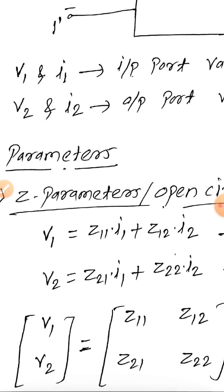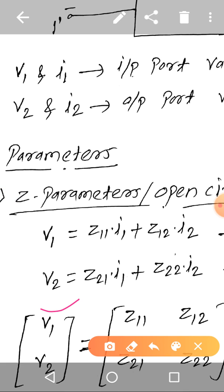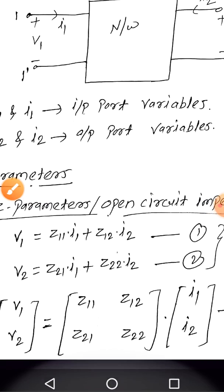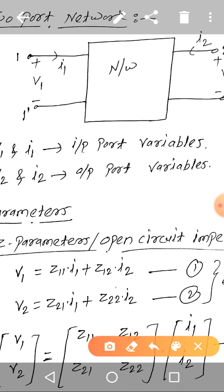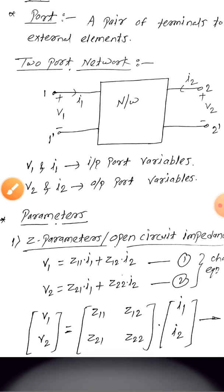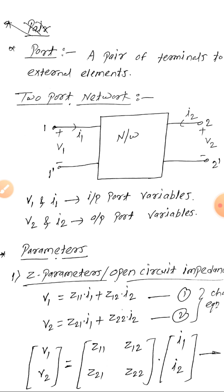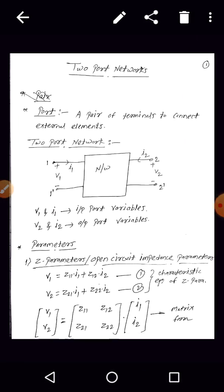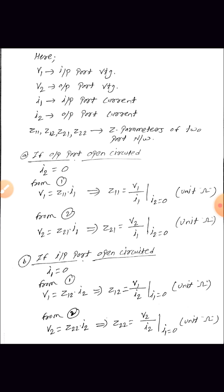In matrix form, we can represent the column matrix of V1, V2 in terms of the port currents I1, I2. In between these two is the Z parameter matrix. Taking matrix multiplication: V1 equals Z11·I1 plus Z12·I2, and V2 equals Z21·I1 plus Z22·I2. This is the matrix form representation of Z parameters. Z parameters give the expression for V1, V2 in terms of I1, I2.